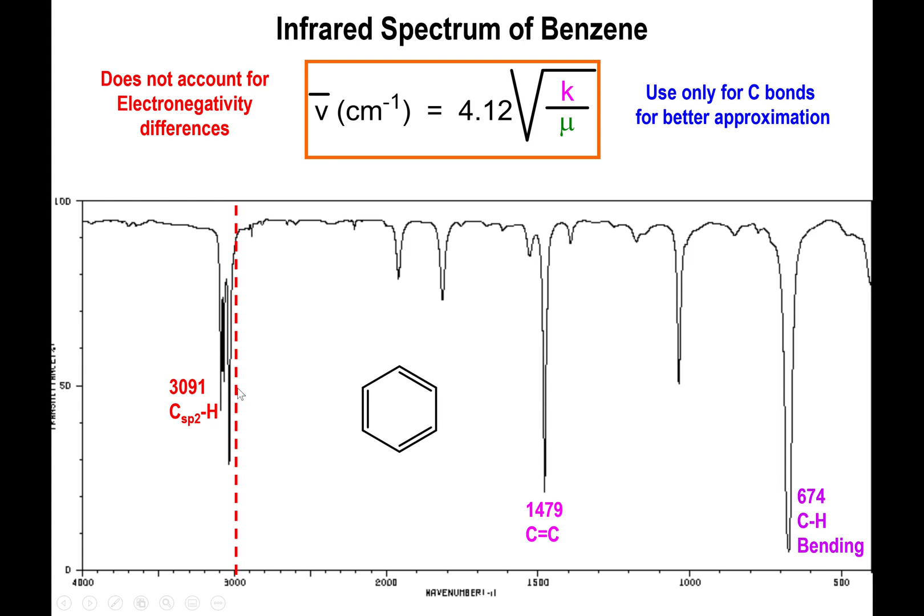Specifically we have peaks slightly above 3000 as you should have because you have CH bonds bound to technically unsaturated carbons. But you also have a peak that's appearing about the 1500 region, somewhere in the 1400 really. That represents actually the carbon-carbon double bonds.